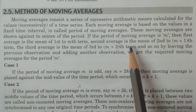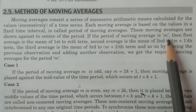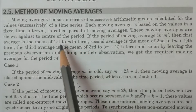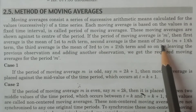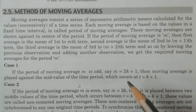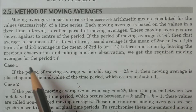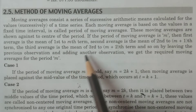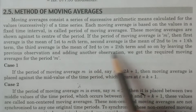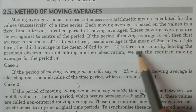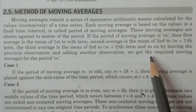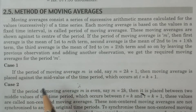If the period of moving average is m, then the first average is calculated from the first term to the mth term. The second average is from the second term to the m+1 term — that is, you move by leaving one observation. The third average goes from the third term to the m+2 term. By leaving the previous observation and adding another observation, we get the required moving averages for the period m.